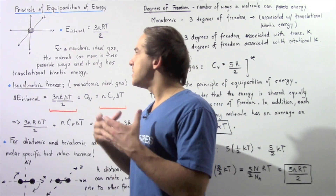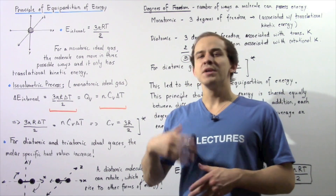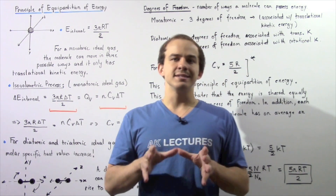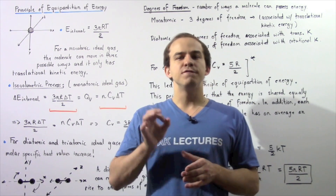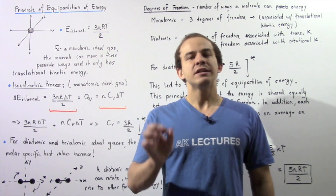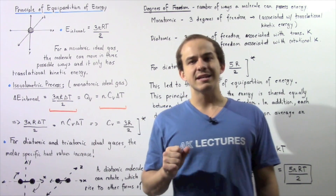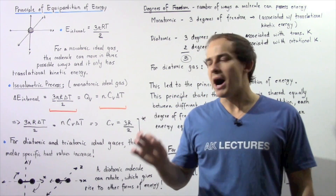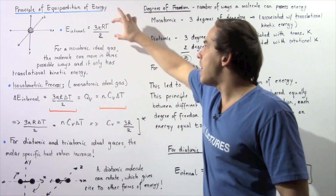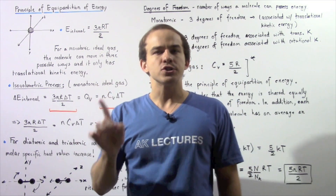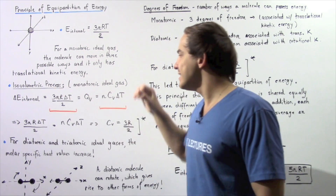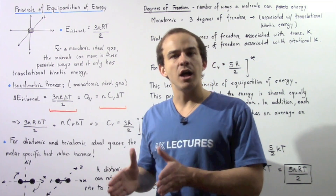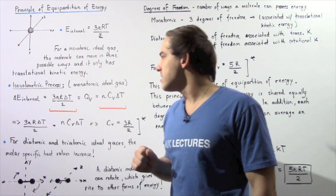Now let's suppose that our monatomic ideal gas system is undergoing an isovolumetric process — a process in which the change in volume is zero. This implies that no work is done by or on the ideal gas system. From the first law of thermodynamics, the change in internal energy equals Q_V, which is the energy transferred as a result of a temperature difference in an isovolumetric process.